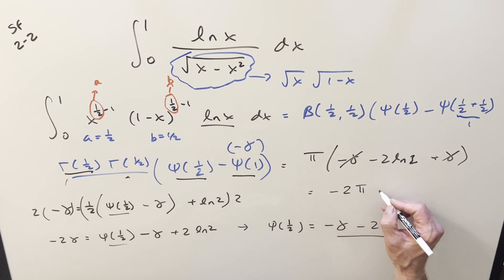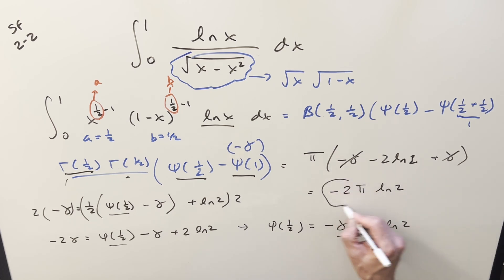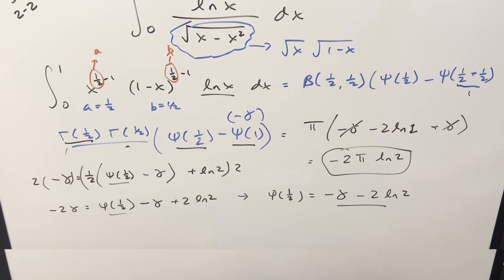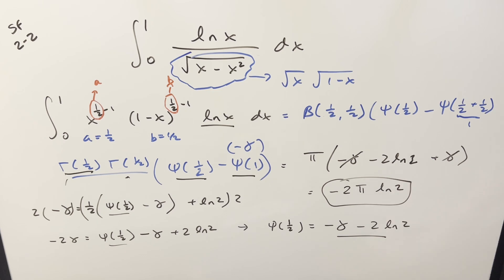So the final answer is minus two pi ln two. There you have a good one from MIT 2025. Thanks so much for watching, have a good day.